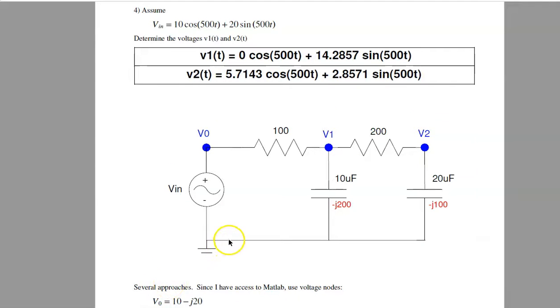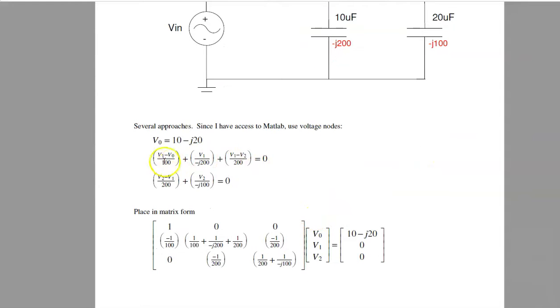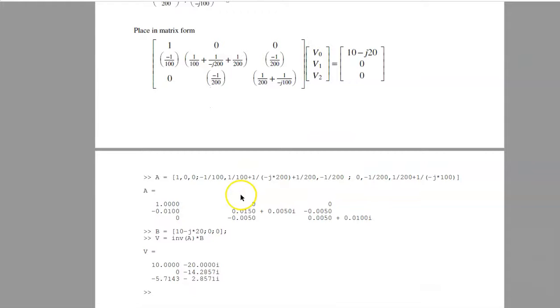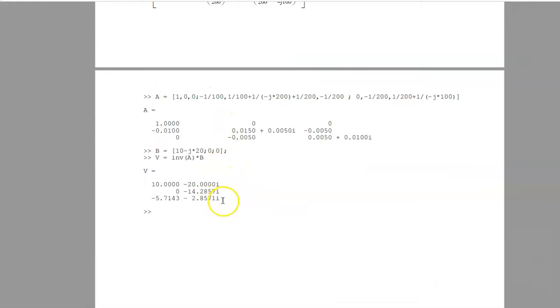Problem 4. There's a couple ways to solve this problem. What I would use, if I have access to MATLAB, is I'd use MATLAB. Here just write the node equations. I've got three equations, three unknowns. V0 is Vn. In phasor form, that's 10 minus J20. Add the capacitor, since frequency is 500, it's minus J200, minus J100. Write the node equation of V1, node equation of V2, and solve. So this would be V0 is 10 minus J20, node equation of V1, node equation of V2. Place in matrix form, throw it in MATLAB, and solve. So there's your answer.